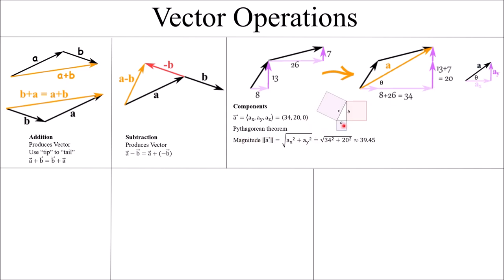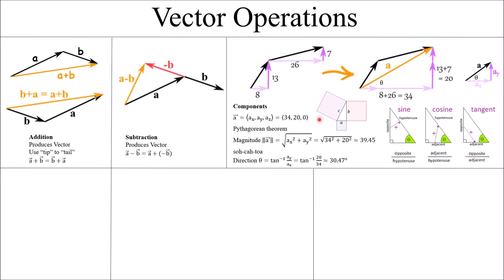The Pythagorean theorem is very important. For a right triangle, A squared plus B squared equals C squared — the areas of the squares on each side. This lets us calculate the magnitude of a vector. Here, 34 squared plus 20 squared, then take the square root, gives a magnitude of approximately 39.45. But since it's a vector, that's just the magnitude; we also need the direction, which often requires trigonometry.